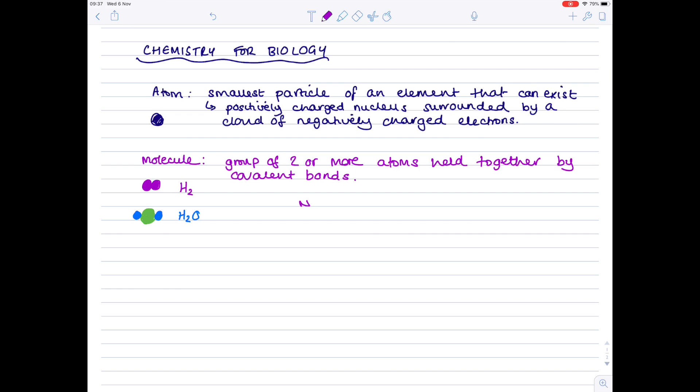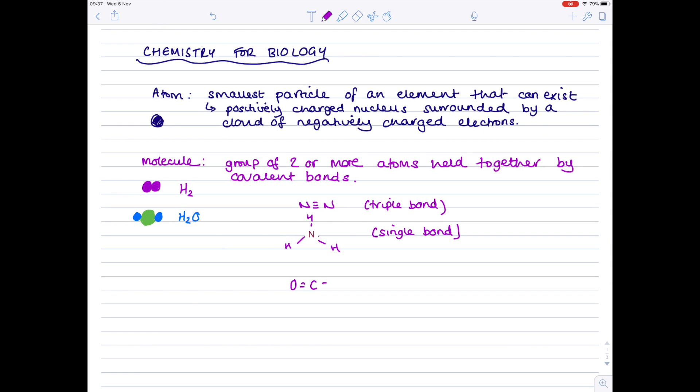Now, in terms of the number of bonds, if you have something like a nitrogen molecule, then it's a triple bond, and double bonds also exist, such as in the case of carbon dioxide.